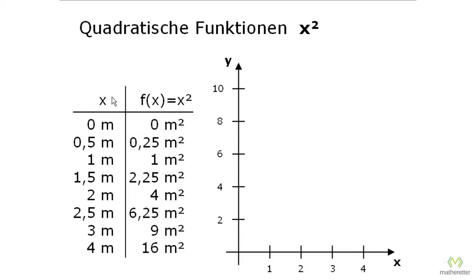So now we enter our x's and our y's here in the coordinate system. So for 0 we get 0 square meters, we enter that. Next we take 0.5 and 0.25, 1 and 1, 1.5 and 2.25, 2 and 4, 2.5 and 6.25, and finally 3 and 9.